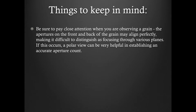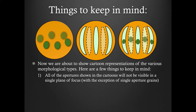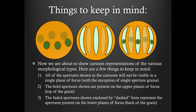Now we are about to show you some cartoon representations of the various morphological types. Here are a few things to keep in mind. Number 1: all of the apertures shown in the cartoons will not be visible in a single plane of focus. Number 2: the bold apertures shown are present in the upper planes of focus. Number 3: the faded apertures shown, enclosed by the dashed lines, represent apertures present on the lower planes of focus.